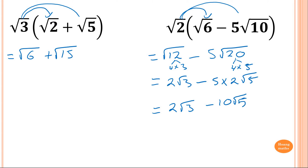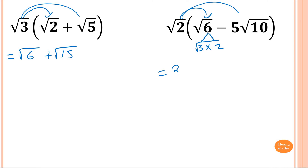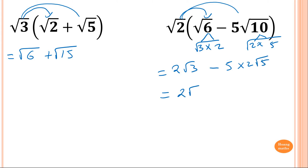So that's one way of doing it. The other way: I prefer to simplify first. So 6 is 3 times 2 — square root of 2 times square root of 2 is 2, giving 2 root 3. And 10 is 2 times 5, so square root of 2 times square root of 2 is 2, giving 5 times 2 times root 5. Which is 2 square root 3 minus 10 square root of 5.